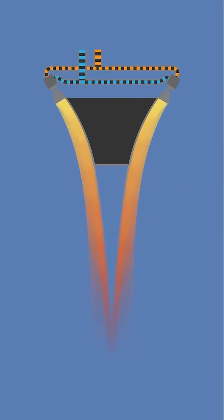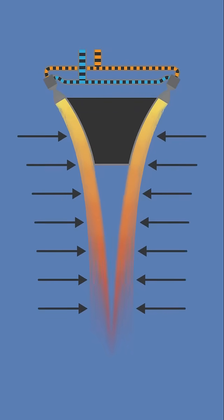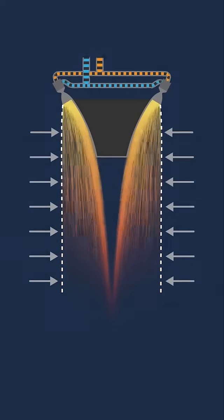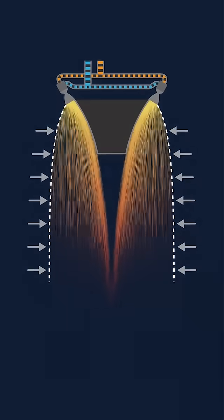The aerospike doesn't have that problem. The air and the spike work together, creating a virtual nozzle which shape changes as the altitude increases. It is adapting to keep the efficiency high at all altitudes.